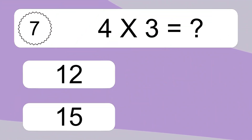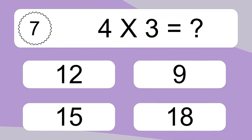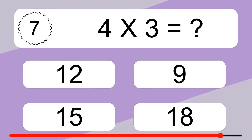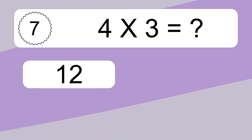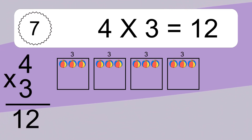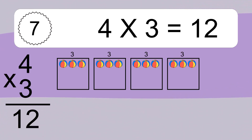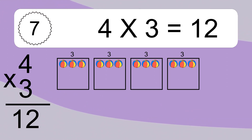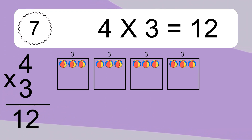4 times 3 equals what? We have 4 boxes, and each box has 3 colorful balls inside. 4 times 3 equals 12.